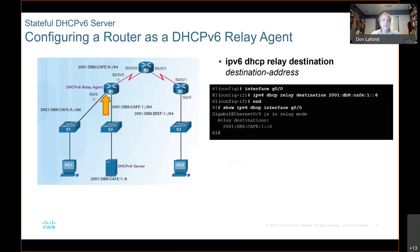Here's the DHCPv6 server and it is outside of this network. This is the CAFE:A network, the CAFE:1 network — they have two different networks. To get out of this network, if this router is not the DHCPv6 server, then it needs a helper address right there. Then the router can send a unicast message to the server requesting that information on behalf of PC1.